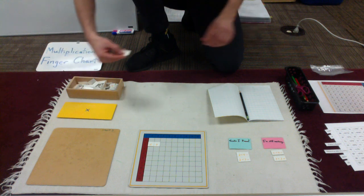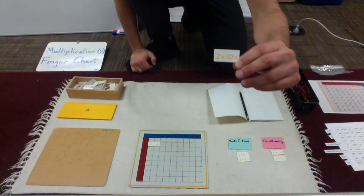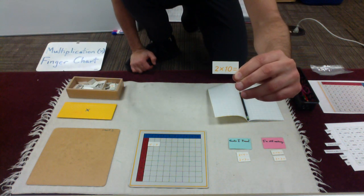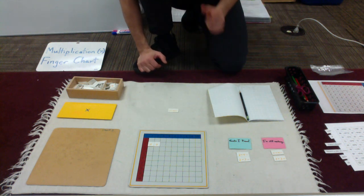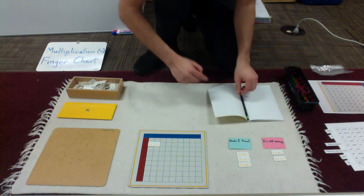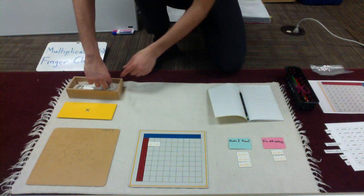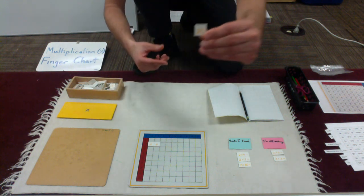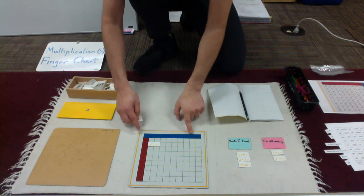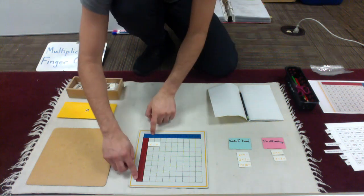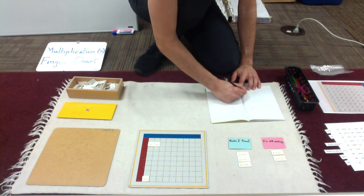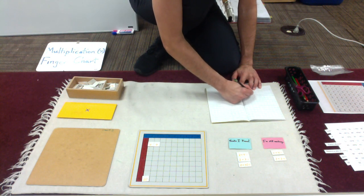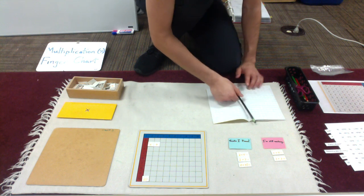Let's do another. 2 times 10. 2 times 10 is 20. That is a fact I know. So I will place my product, 20, back on my board. 2 times 10. They intersect down there. And then I'll record. See it, say it, write it.